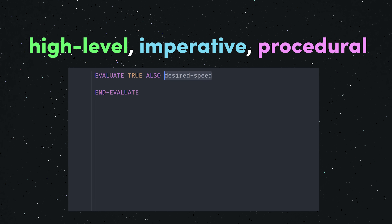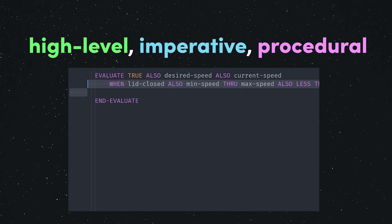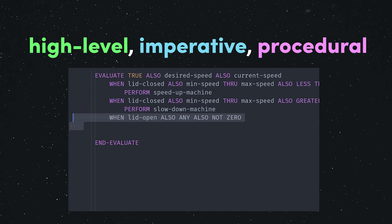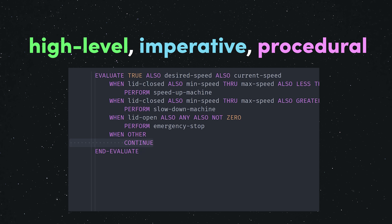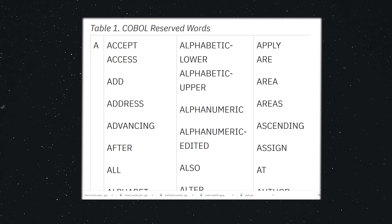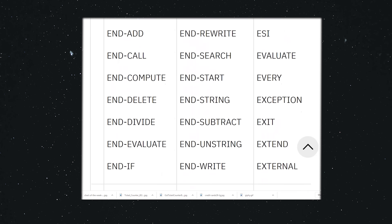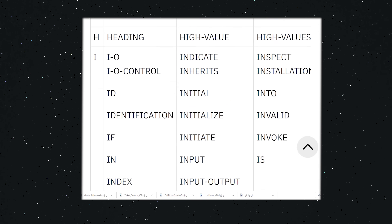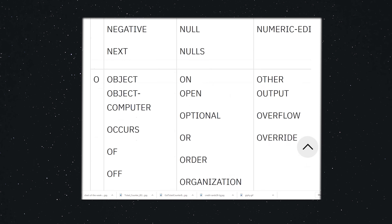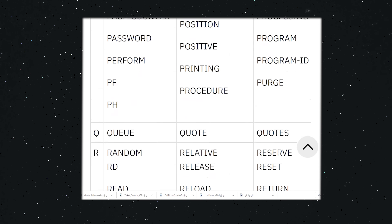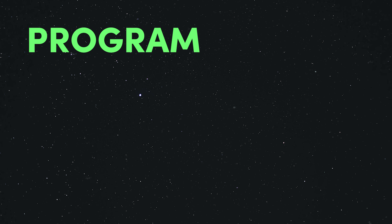It's a high-level, imperative language, which means it's very easy to learn. The syntax is extremely verbose by design because it's self-documenting, and it contains over 600 reserved words for you to memorize and take advantage of. And every COBOL program is structured with an easy-to-follow hierarchy.